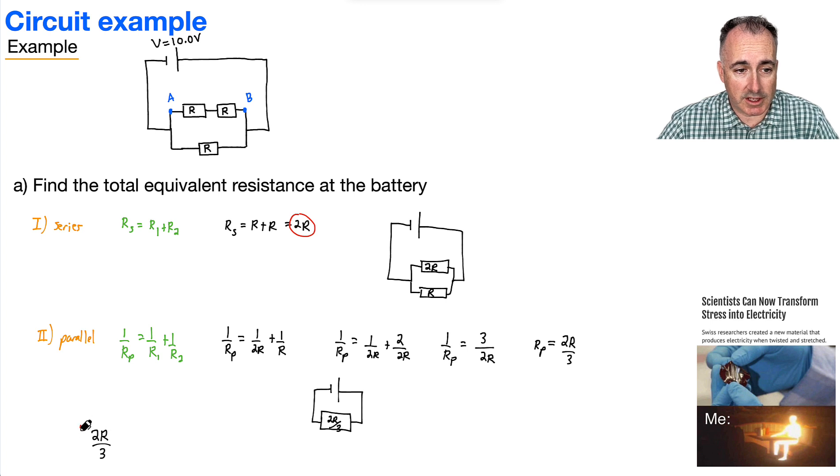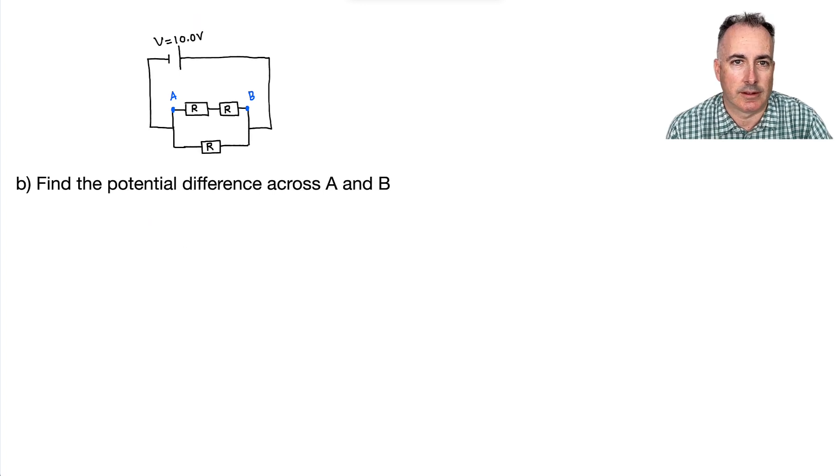Okay, so we've solved the first part here. That is the total equivalent resistance. In other words, the battery is behaving as if there's a single resistor of value 2R over 3. See, that wasn't so simple. That's why I think it's important to do these. Now in part B, I just redrew the circuit here so it's simpler to look at from before. What's the potential difference across A and B?